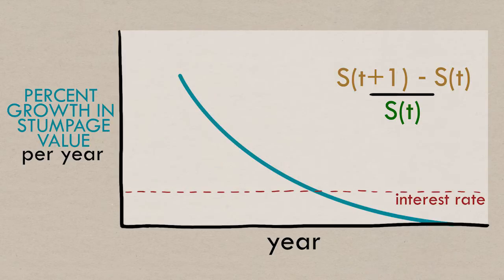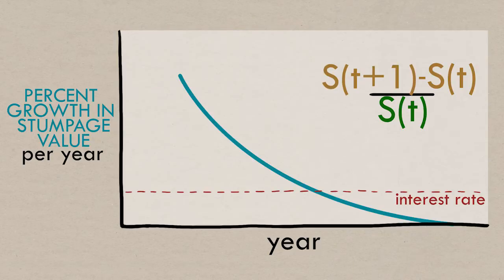Because the price is higher, the stumpage value this year is going to be higher, and the stumpage value next year is going to be higher, but by a proportional amount, such that the whole thing and this line isn't going to change.